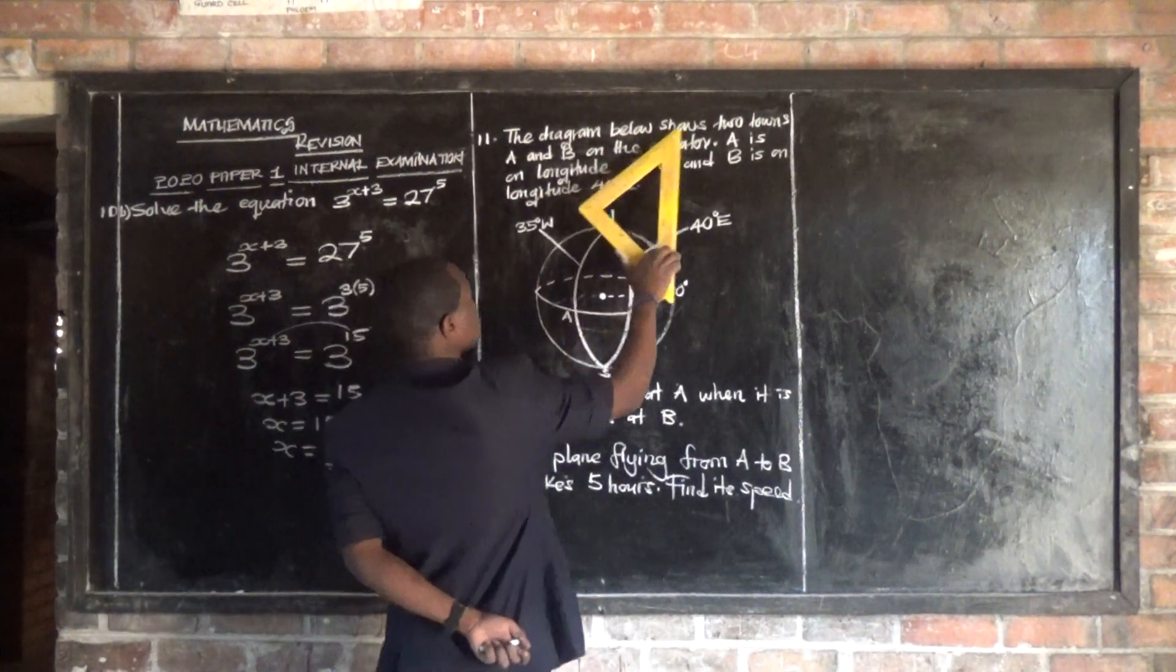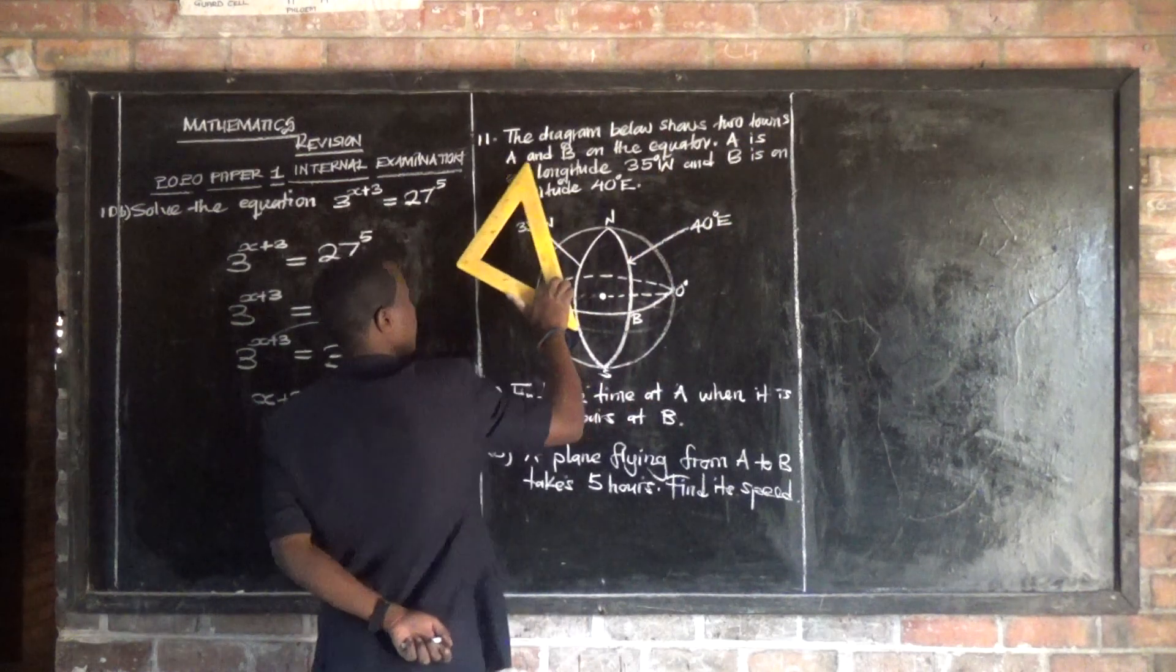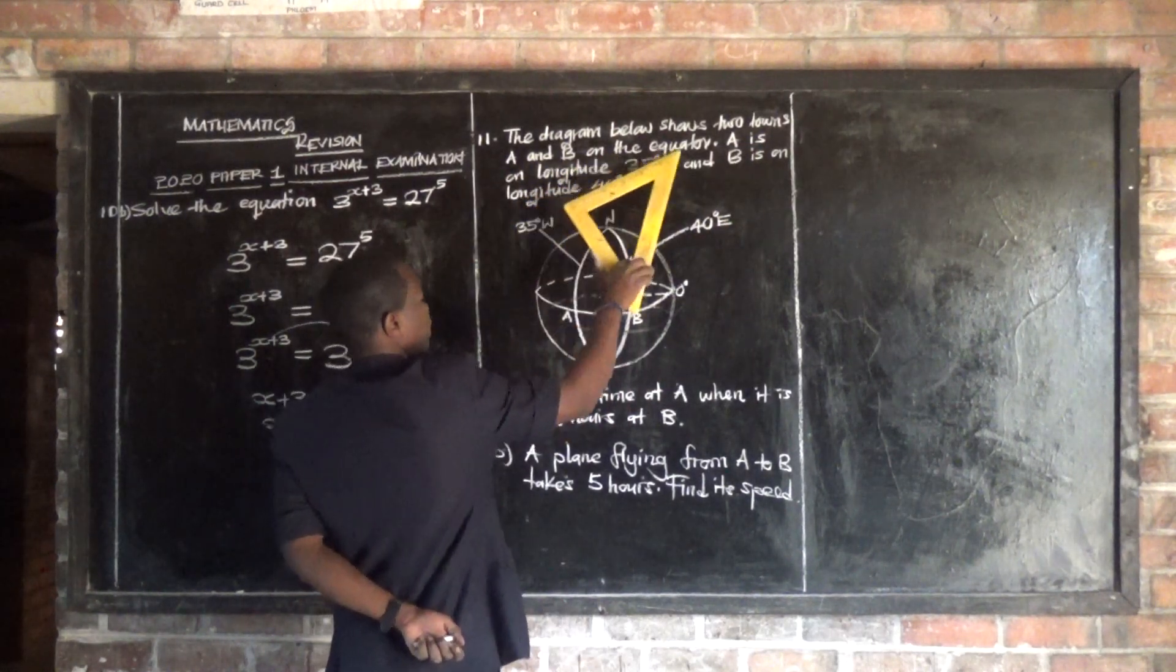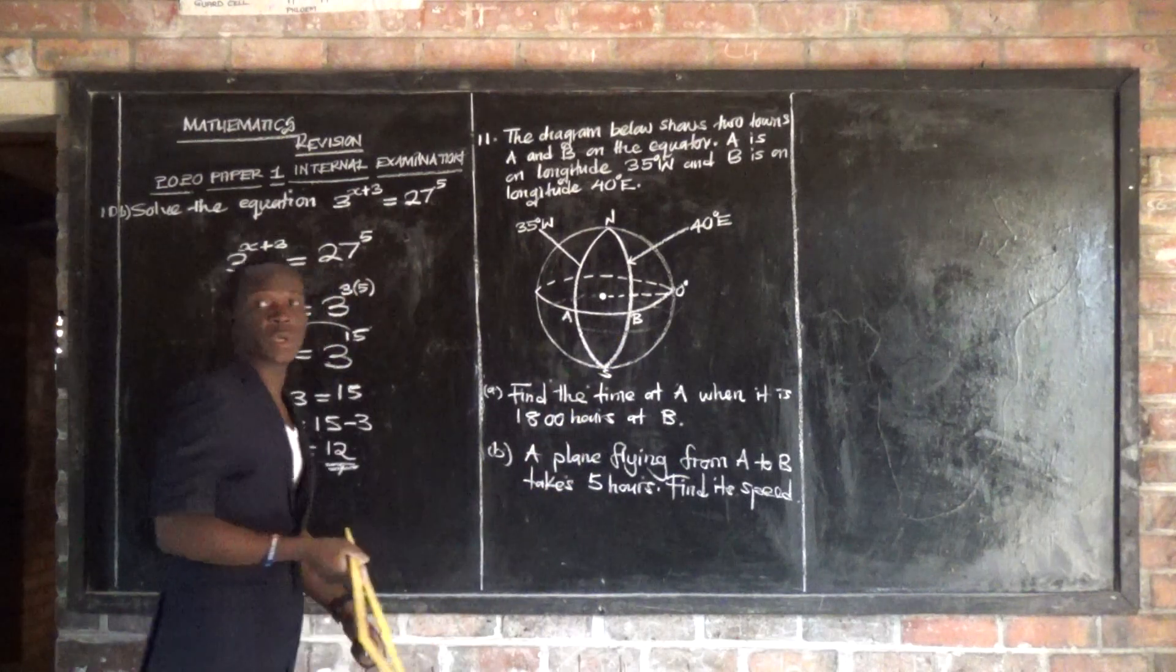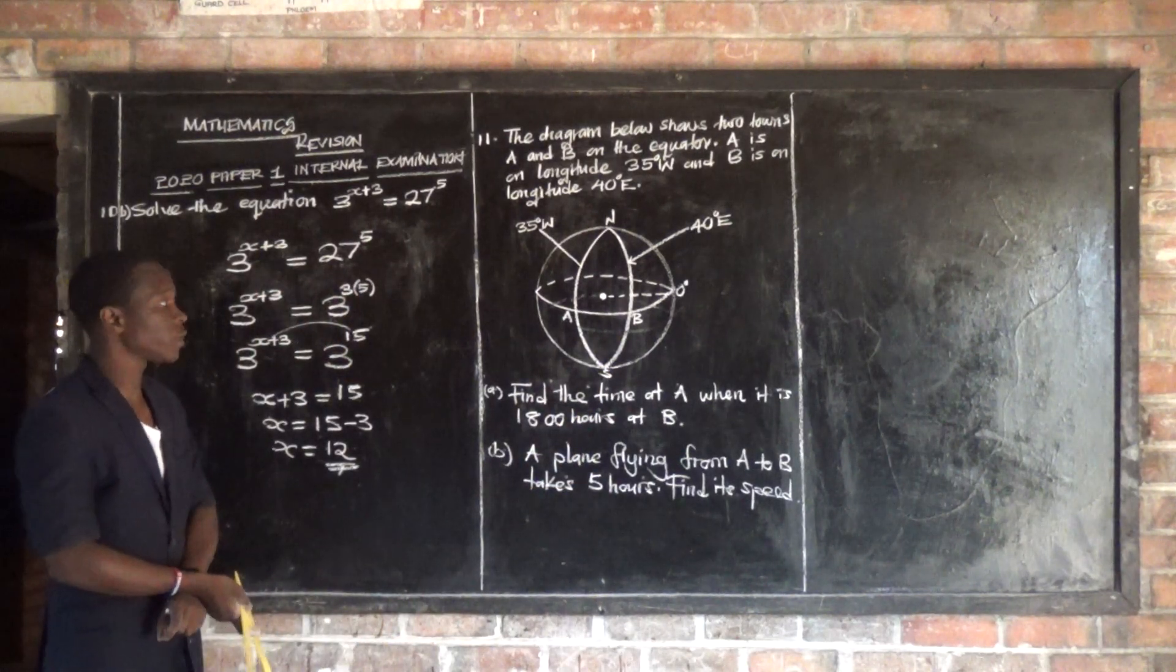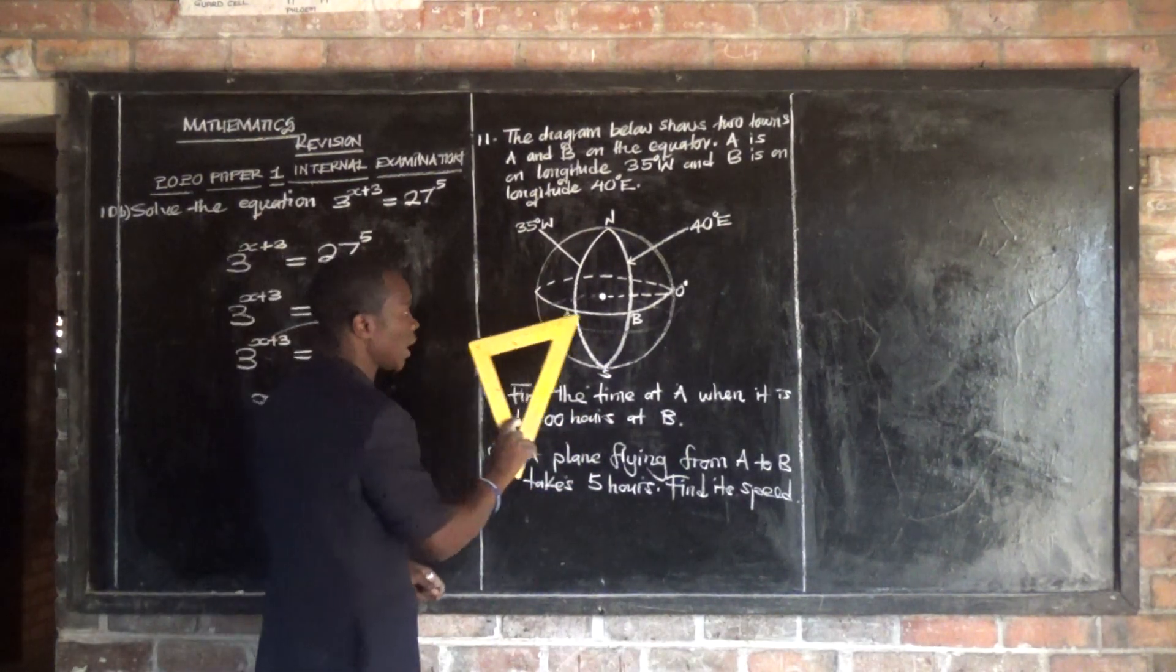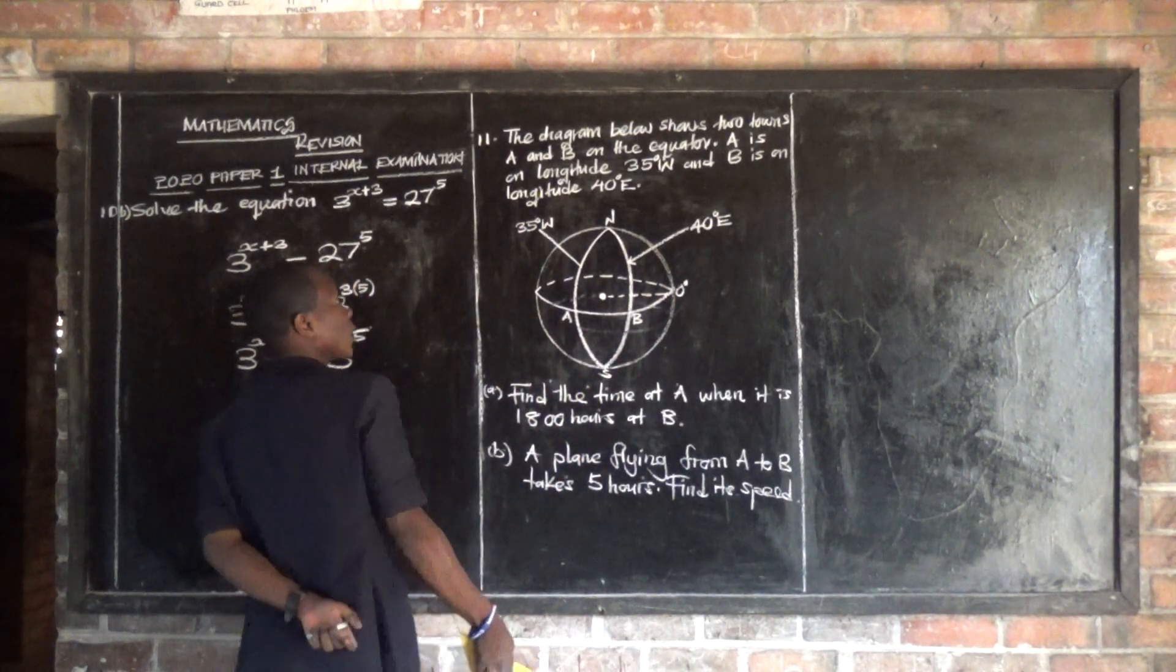It says the diagram below shows two points, A and B, on the equator, which is 0 degrees. And altogether, these are points A and B, they are on the equator, which is 0 degrees.